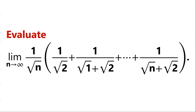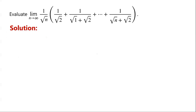Evaluate the limit. The limit contains a sum of fractions. Each fraction has the form of 1 over root k plus root 2, where k is from 0 to n. So we let f of x equal 1 over root x plus root 2, where x is greater than or equal to 0.